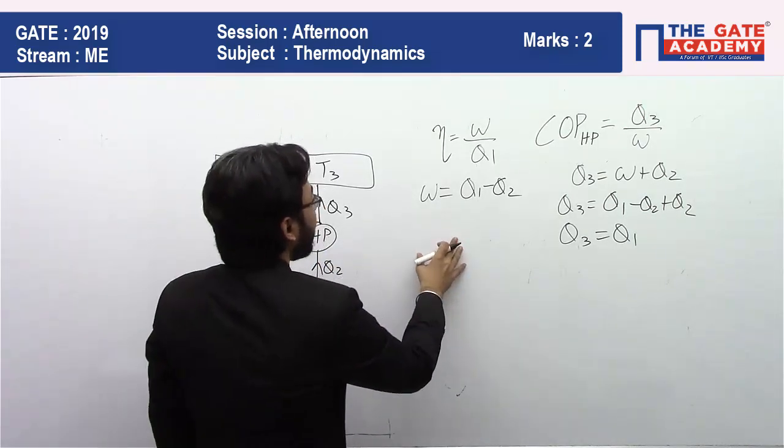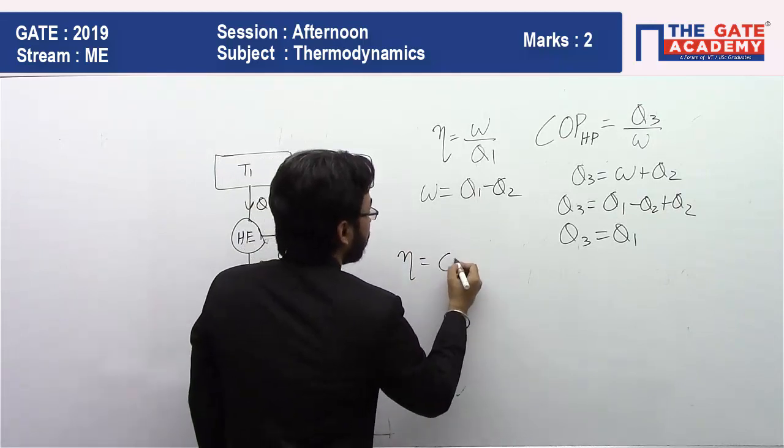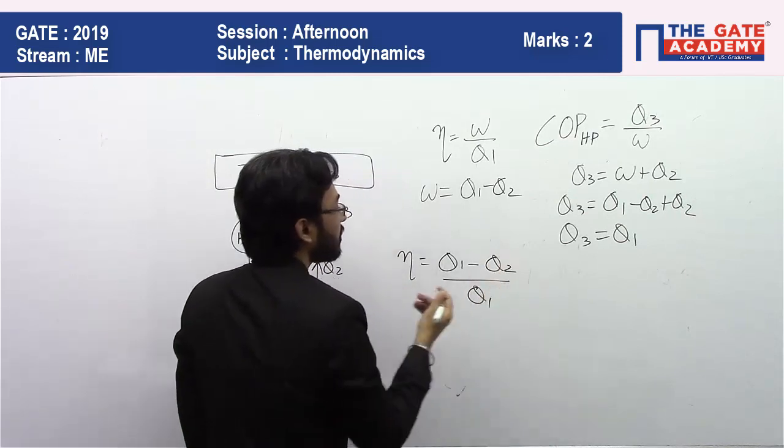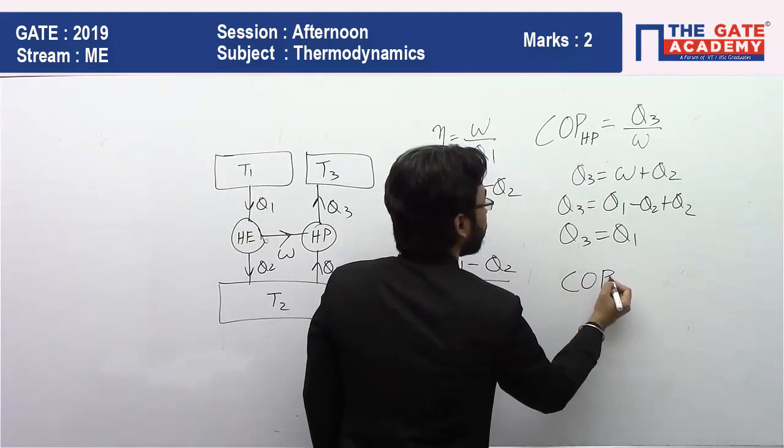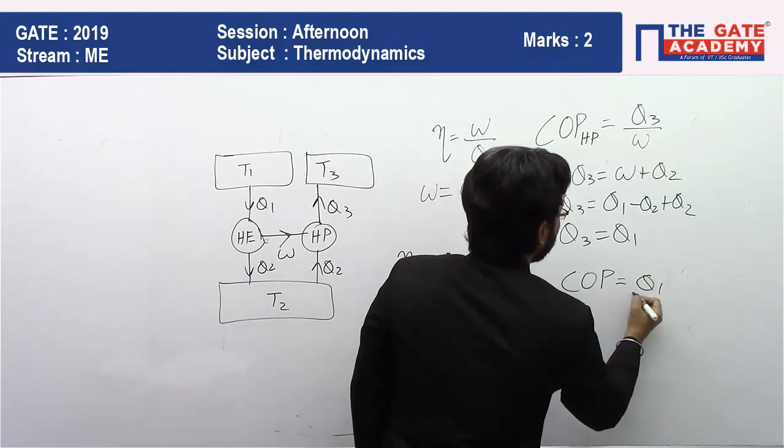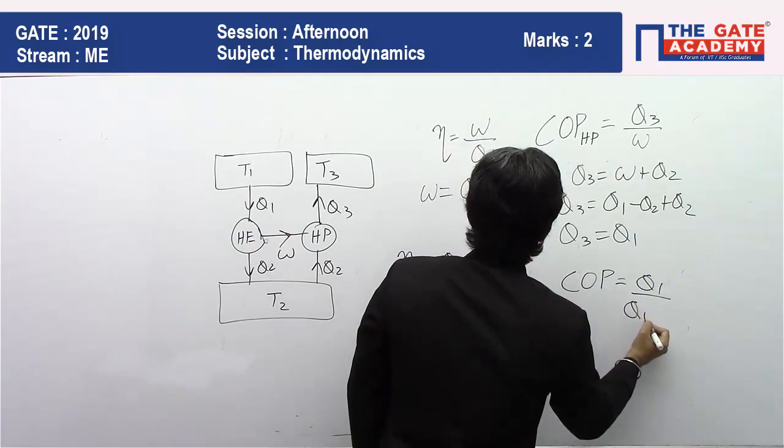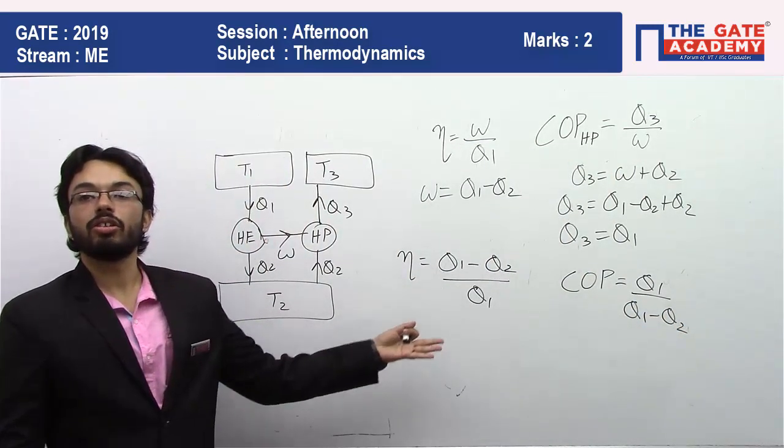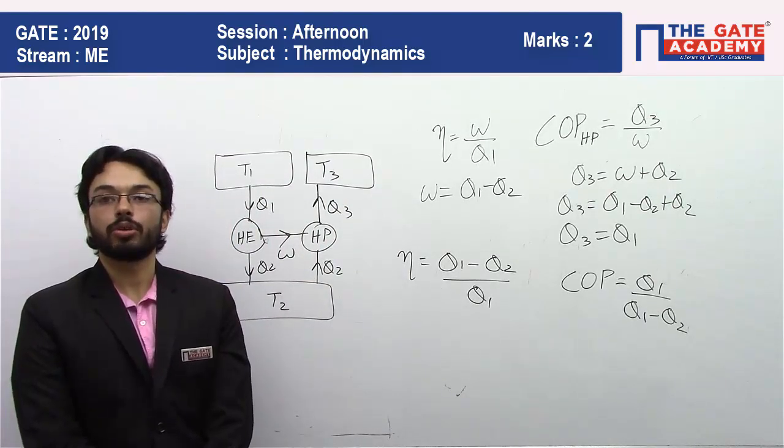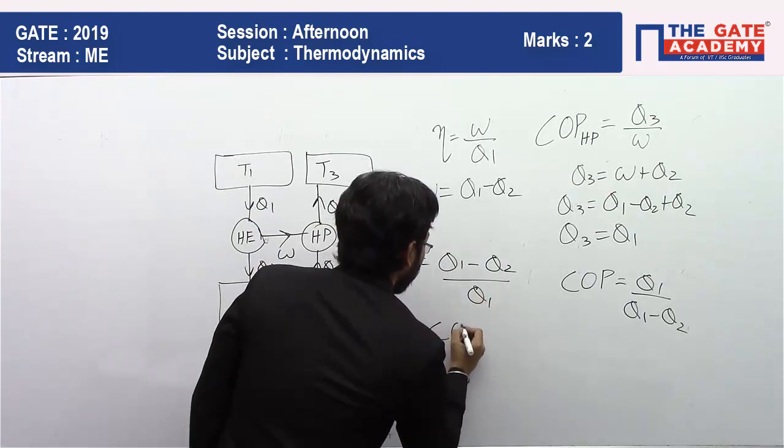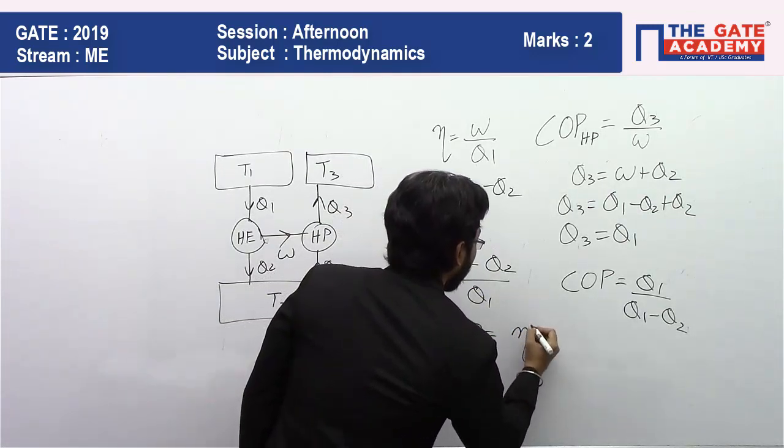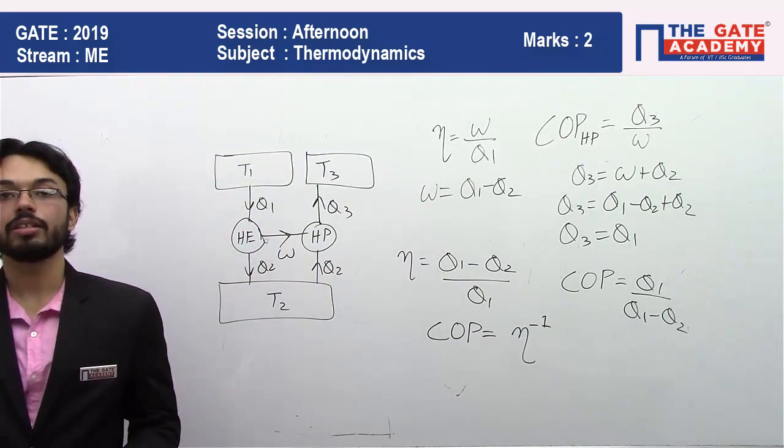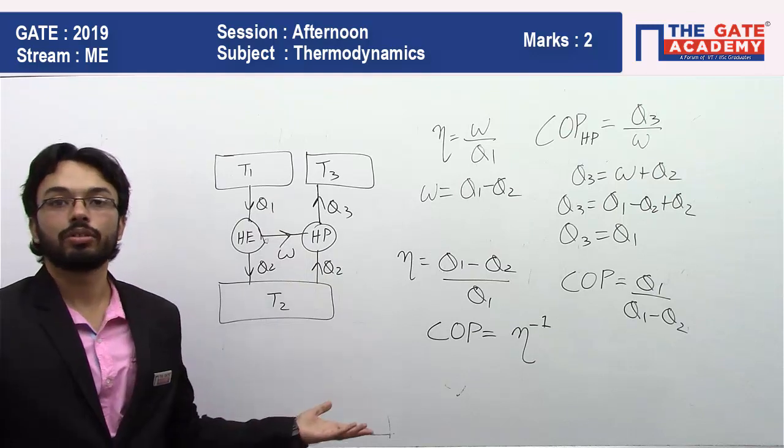So eta will be reduced to Q1 minus Q2 by Q1, and COP will be reduced to Q1 by work, and work was Q1 minus Q2. Basically, you will see that COP and eta are reciprocals. This means that COP is equal to eta raised to the power minus 1. So this option was option number D: COP is equal to eta raised to the power minus 1. So this is your answer.